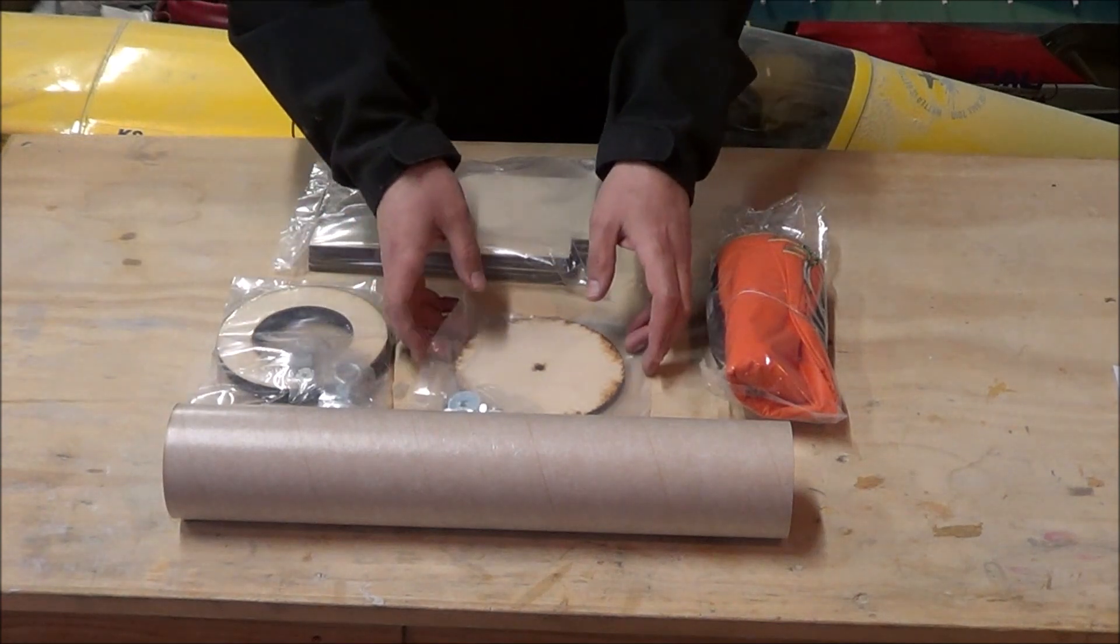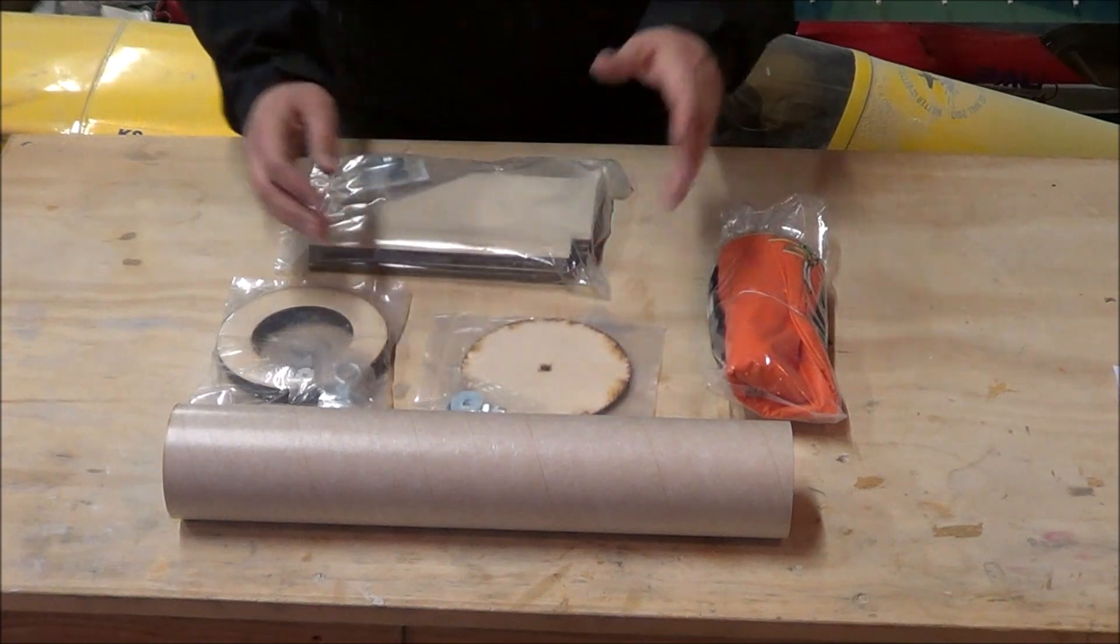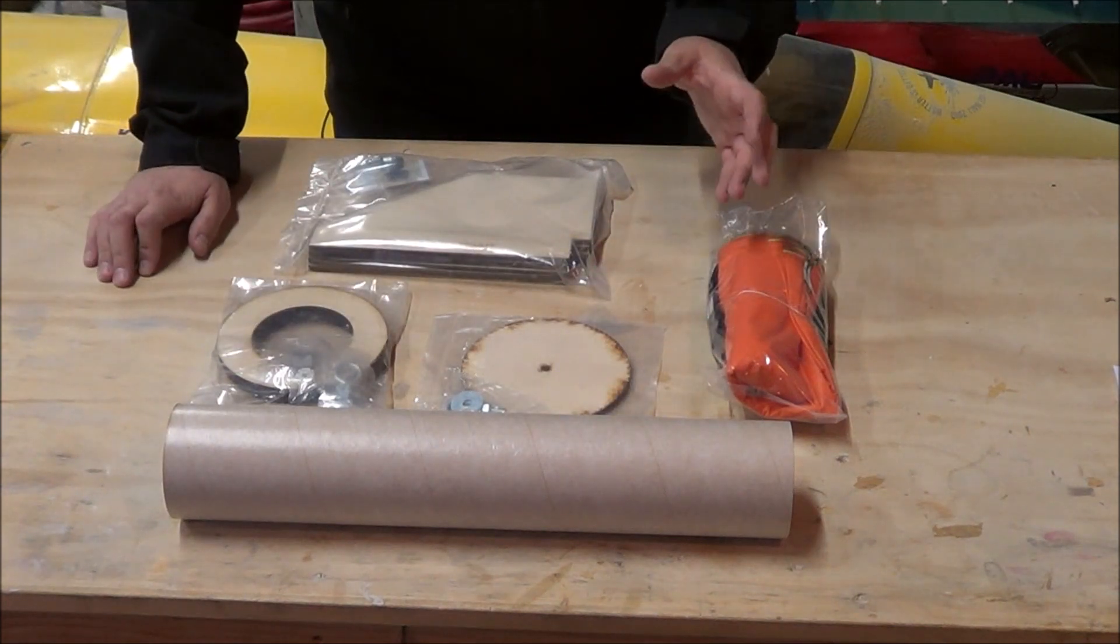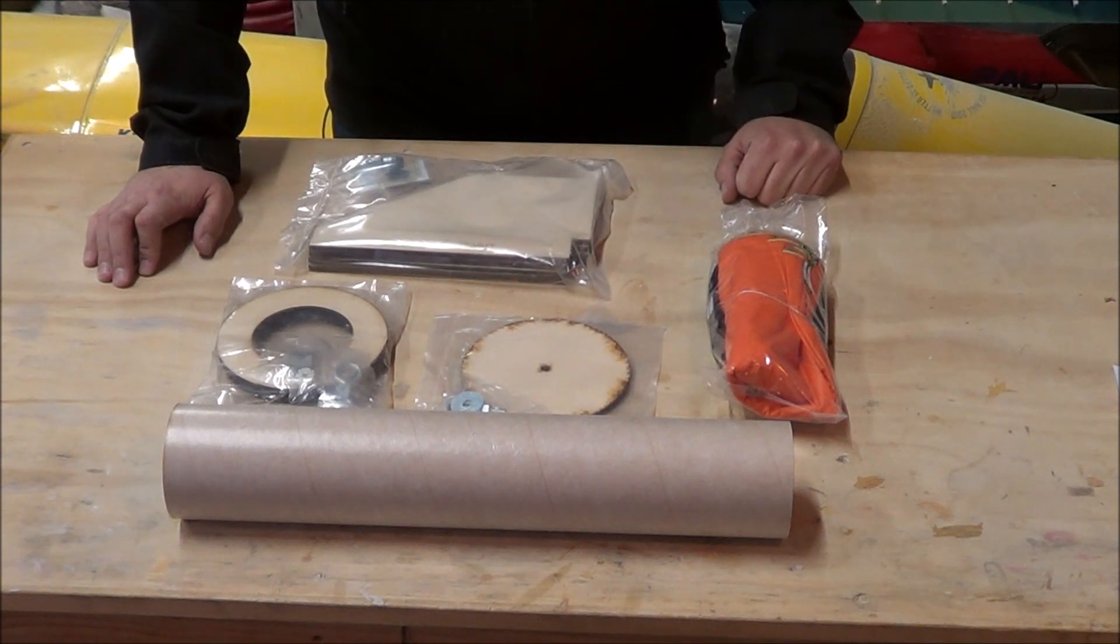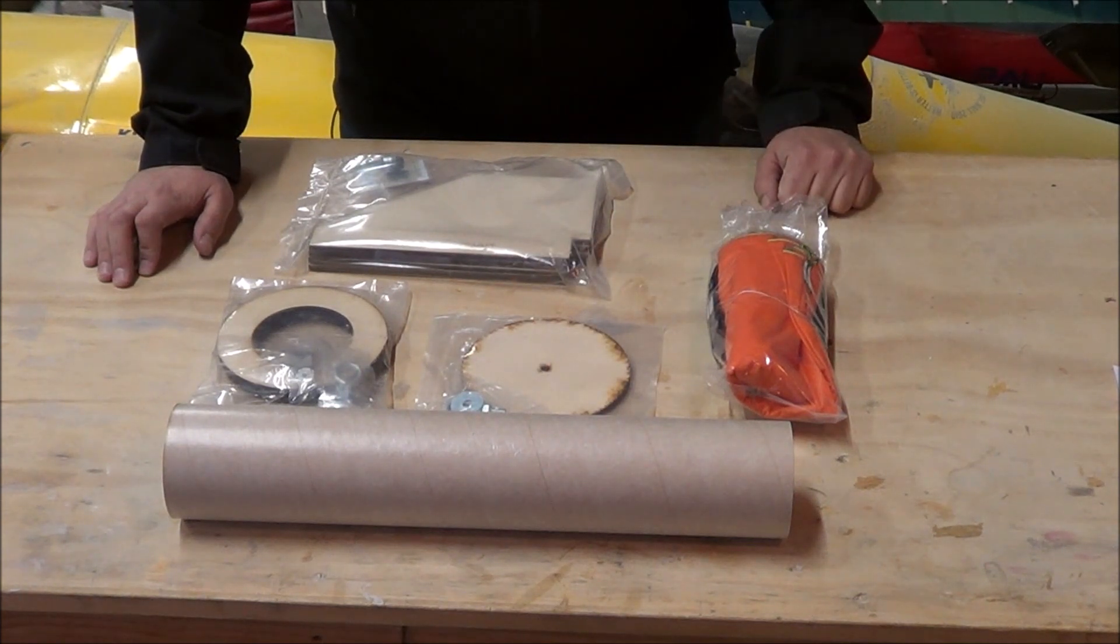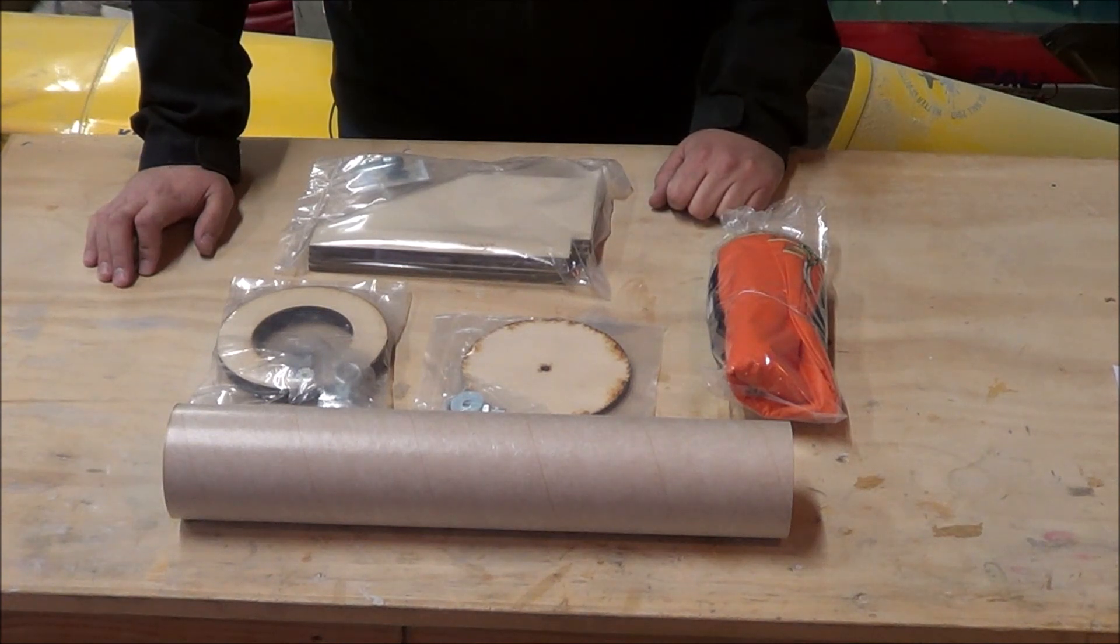Looking at the hardware included, this is a bulkhead that's going to go on the tube coupler. Now, this kit that I purchased was set up for single deploy, so there's a coupler that you would glue the bulkhead into, and use that as your breakpoint of the rocket. However, I'm going to turn that coupler into an avionics bay, and we're going to do a single breakpoint dual deploy on this rocket.